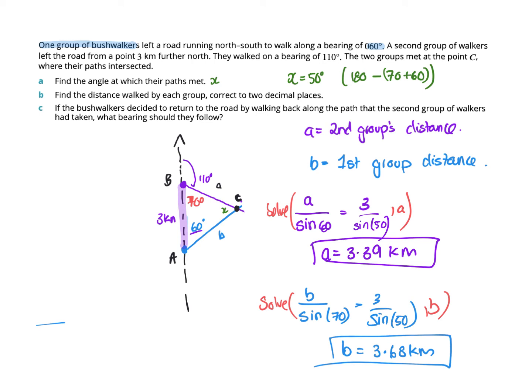If the bushwalkers decide to return to the road by walking back along the path the second group of walkers had taken, what bearing should they go? You're out here where they met. The purple was the second group's distance. So what we want here is we want to know what that bearing all the way round to there is. We already know if in here is 70, there's 70 as well because you've got the parallel lines. So you know that 70 in there. So the bearing will equal 360 minus the 70, which equals 290 degrees true. That's that distance all the way back to there.